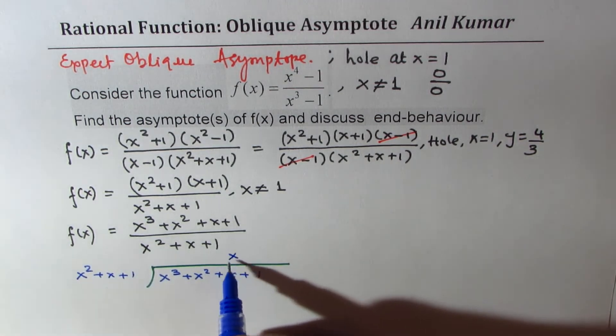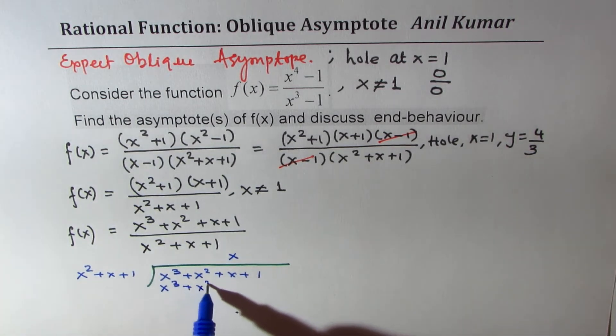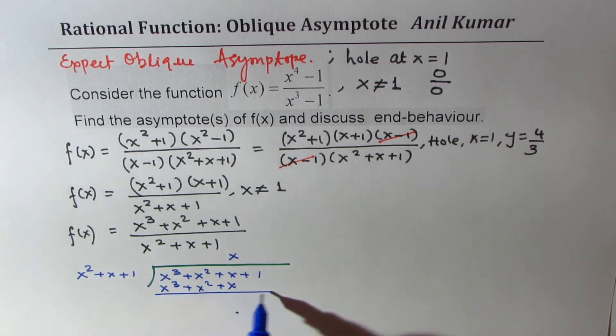So it goes x times. We get x cubed plus x squared plus x. This is 0, and we are left with just 1 here.